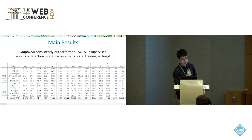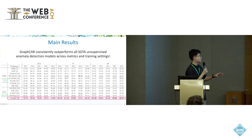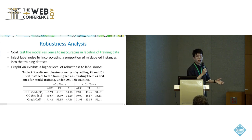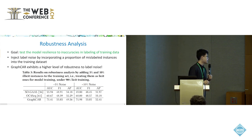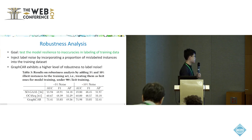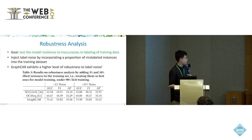We also present a robustness analysis showing that our method is robust to label noise. What we do is include some illicit transactions into our training data — recall that training is normally done on clean data only — but we randomly include 5% or 10% of illicit data into the training process to see whether it affects performance. Some baseline methods are more affected by label noise; however, our detection method remains robust to that noise.